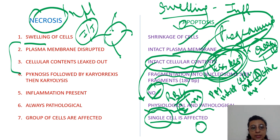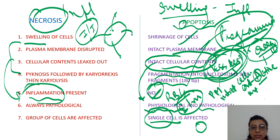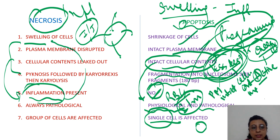Necrosis: the plasma membrane and cellular contents are destroyed, which induces an inflammatory reaction. With inflammation, you can remember the spectrum includes swelling of the cells — and there is swelling of the cells.